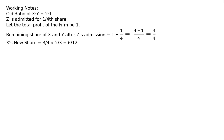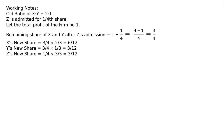Hence, X's new share is 3 upon 4 multiplied by 2 thirds, that is equal to 6 upon 12. Y's new share is 3 upon 12. Z's new share is 1 upon 4 multiplied by 3 upon 3, that is equal to 3 upon 12. Therefore, the new ratio of X to Y to Z is equal to 6 to 3 to 3, that is equal to 2 to 1 to 1.